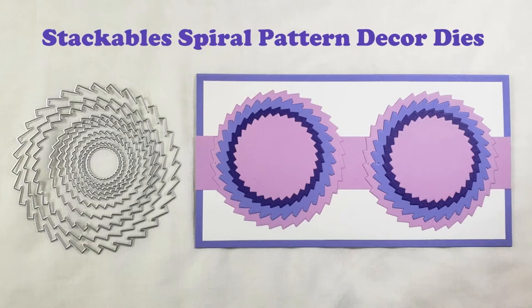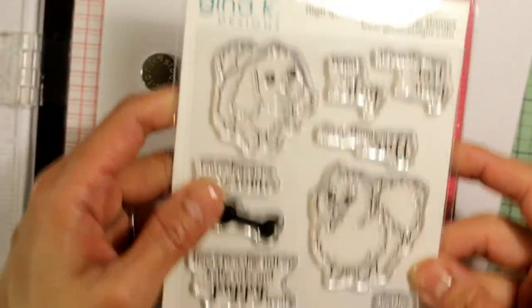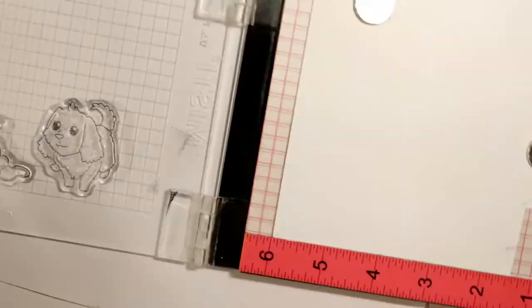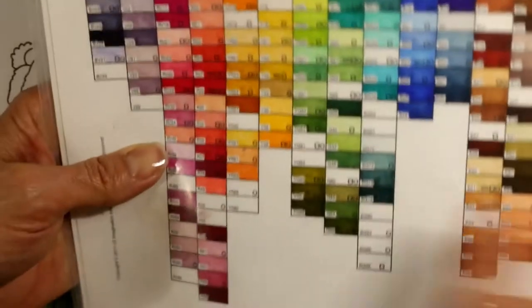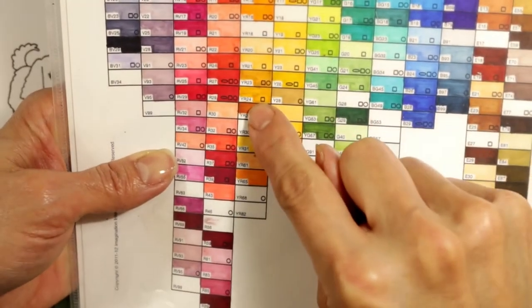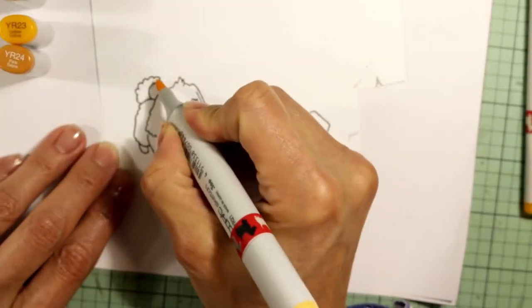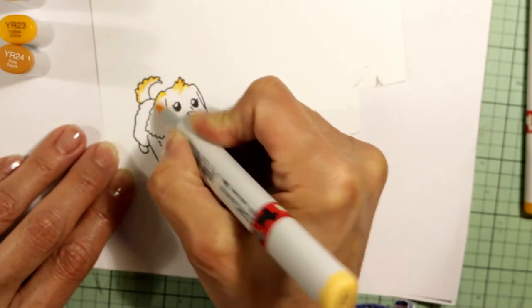So that is the completed card front design. The stamp set that I'm using is this retired Gina K Design Playful Pups and I've decided to color up two of these little puppies, one which looks just like a miniature poodle and the other is so cute, it's got its belly up for a belly rub.